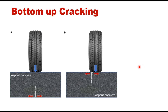The second type is bottom-up cracking. In the case of bottom-up cracking, the crack initiates at the bottom of the bituminous layer and propagates upward — it is just the opposite of top-down cracking. Top-down cracking occurs at the edge of the wear surface, while bottom-up cracking appears at the bottom of the asphalt layer.